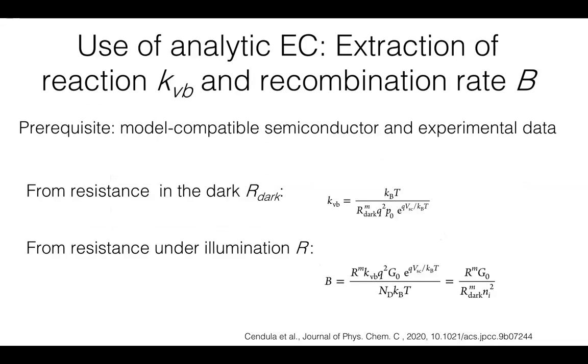Hence, we can use the impedance model now simply because we have the analytical formulas to, for example, extract the recombination rate and reaction rate. From resistance in the dark, when we have a model compatible semiconductor and experimental data, from this formula, we can extract the reaction rate. And from the impedance under illumination, then we can extract the recombination rate B.